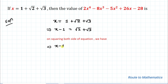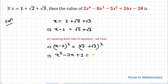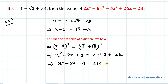In the next step, let's square both sides of the equation. So we have (x minus 1)² equals (root 2 plus root 3)². Applying the algebraic identity, we get x² minus 2x plus 1 equals 2 plus 3 plus 2 root 6. Taking 2 plus 3 to the left hand side gives us x² minus 2x minus 4 equals 2 root 6. Let's call this Equation 1.